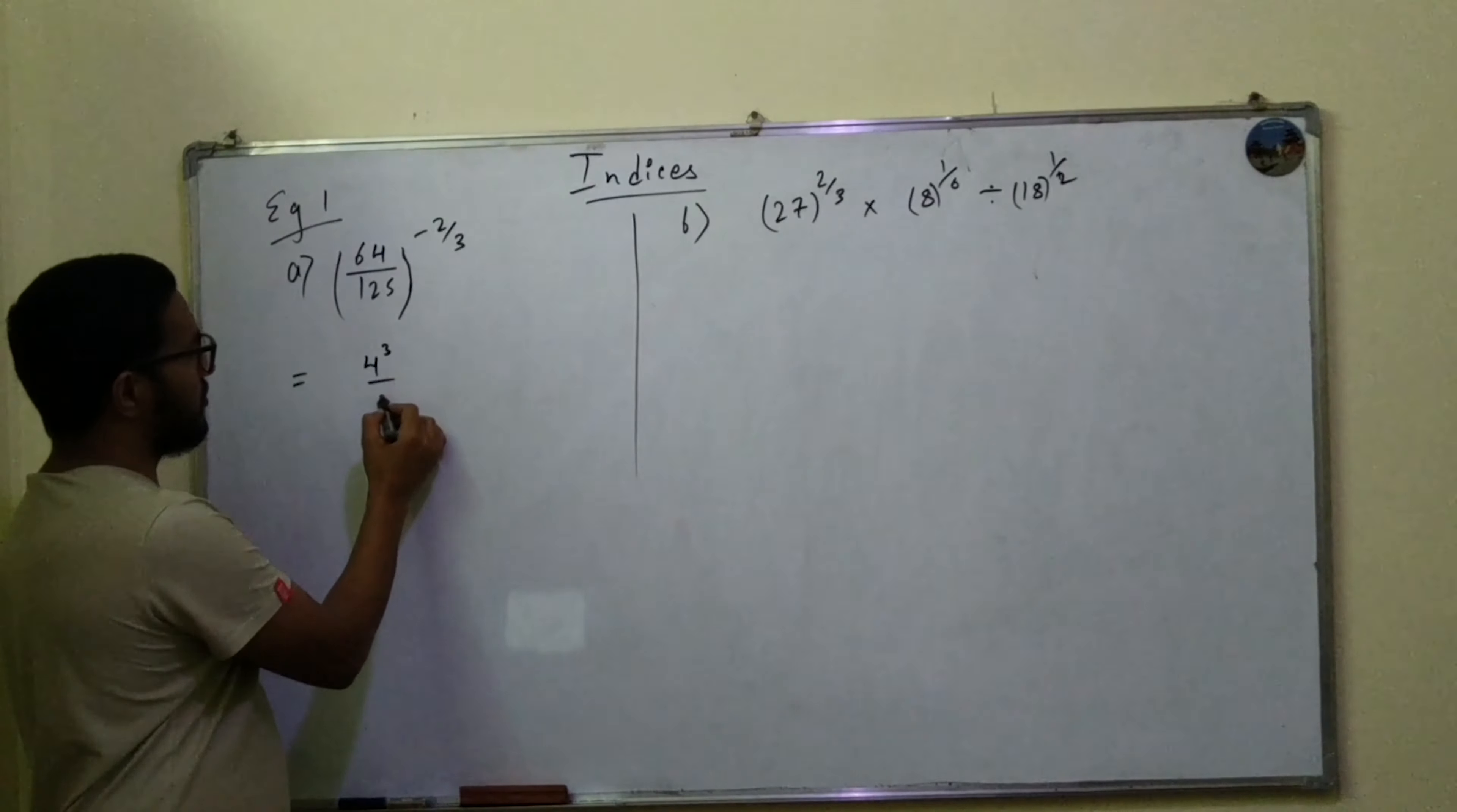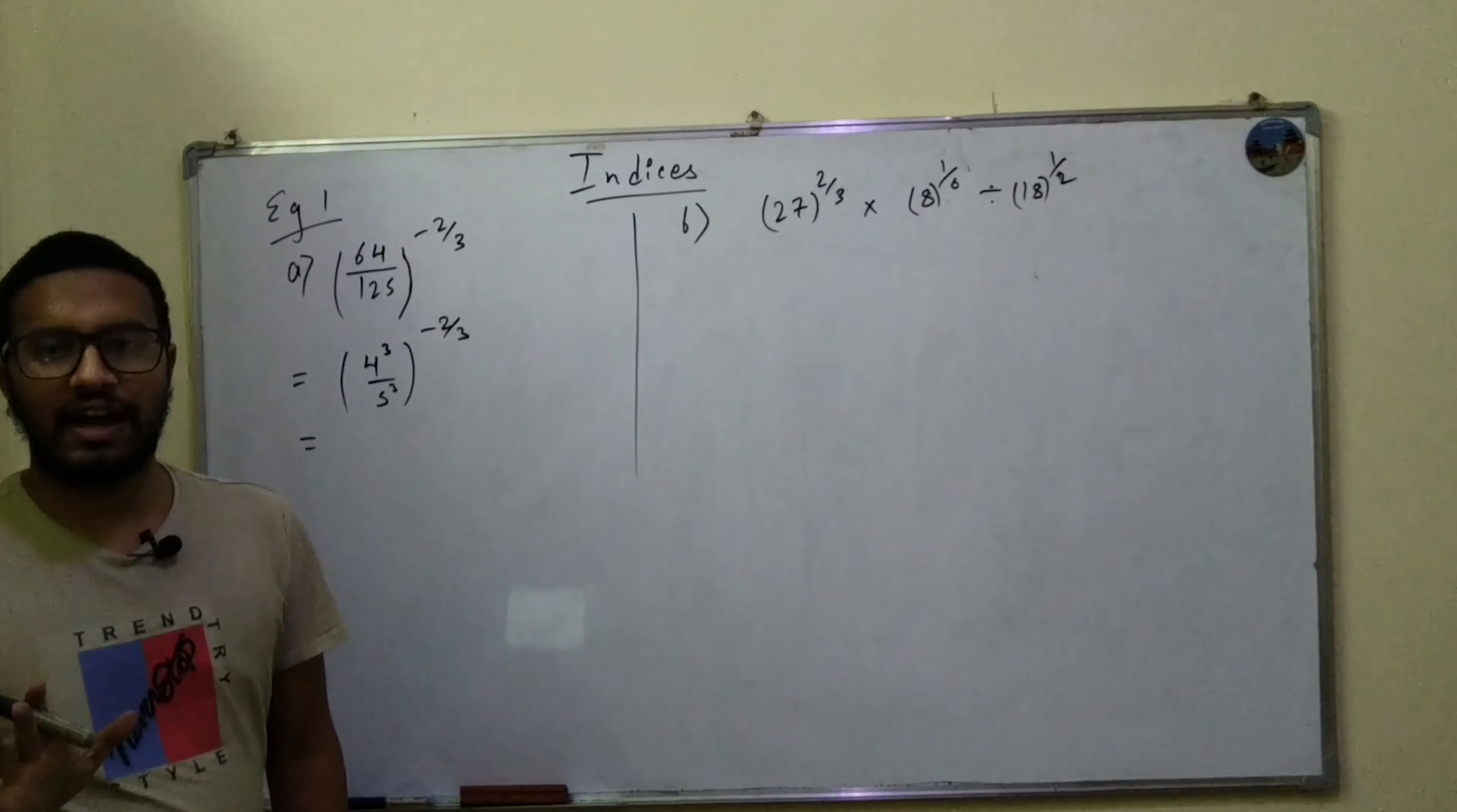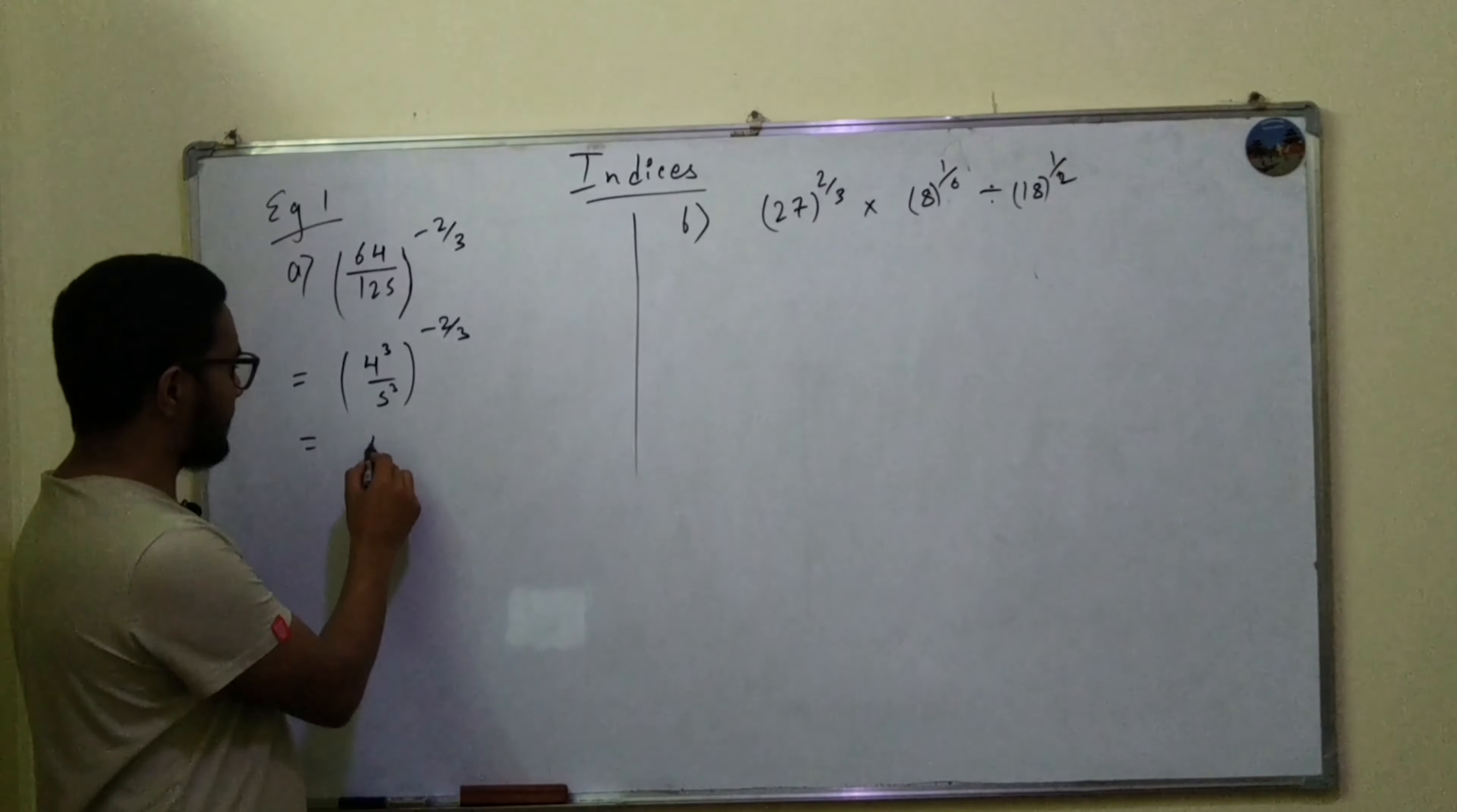So 4^3/5^3 times -2/3. After this, (4/5)^3 times -2/3 - you can write it in that form because the exponent 3 belongs to both of them.